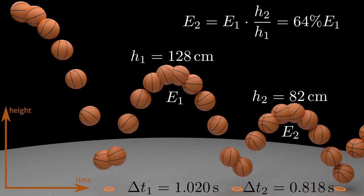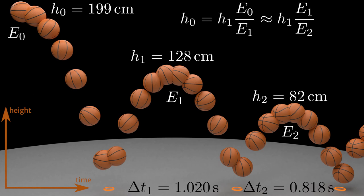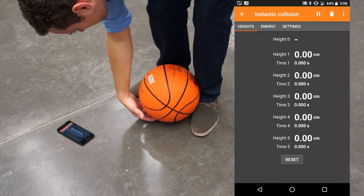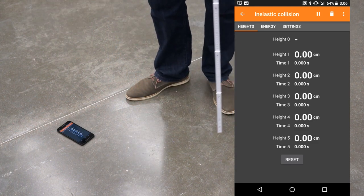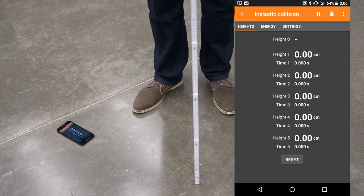The potential energy before and after a bounce only changes because of a different maximum height. If we assume that the same ratio of energy is also lost on the first bounce, we can estimate the initial height. You might notice that for most balls you lose a bit more energy for fast impacts and keep more energy on the slower bounces from smaller heights. So we often slightly underestimate the initial height because in reality there was a bit more energy at the beginning that was lost on the first bounce.